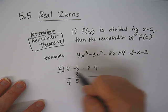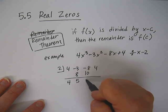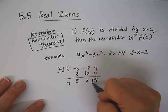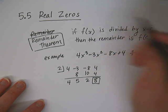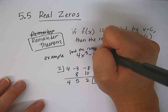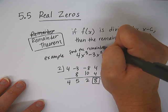4 times 2 is 8. Negative 3 plus 8 is 5. 5 times 2 is 10. Negative 8 plus 10 is 2. 2 times 2 is 4. The remainder is 8.